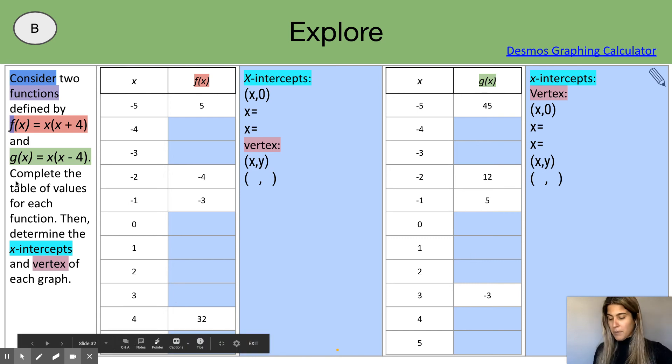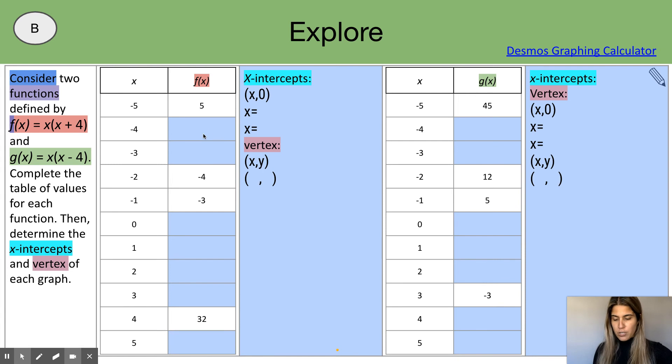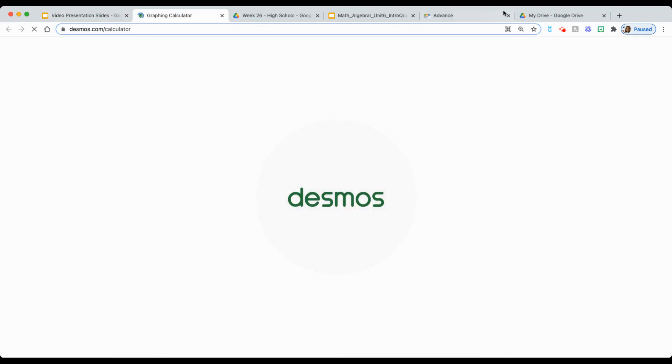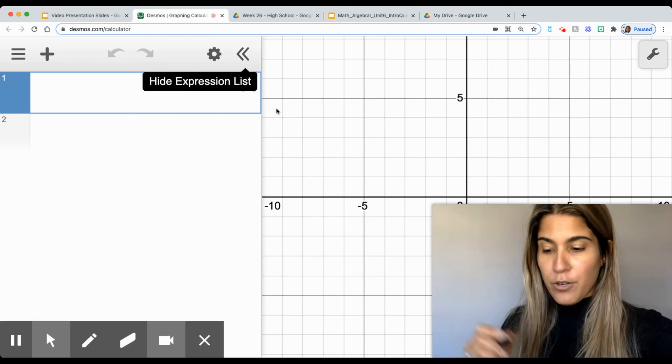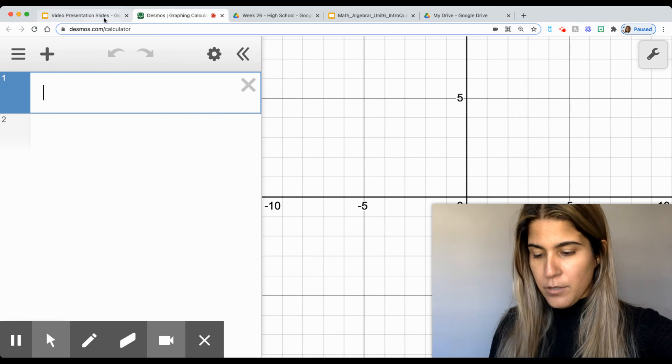Now, it says, complete the table of values for each function. So we have missing values in each of these graphs. How can you complete these values? One thing is to use the tools at your disposal. You can go into your Desmos graphing calculator, which I have linked right here. Remember, you can always use Desmos. And once Desmos opens up, you are going to make sure you are inputting the correct function. Do one at a time.